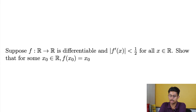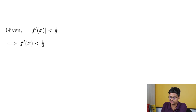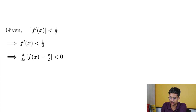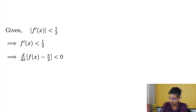Here what we are given: |f'(x)| < 1/2, which means f'(x) < 1/2. So f'(x) - 1/2 < 0, which means the derivative of f(x) - x/2 is less than zero. So f(x) - x/2 is a strictly decreasing function. We are going to use that.